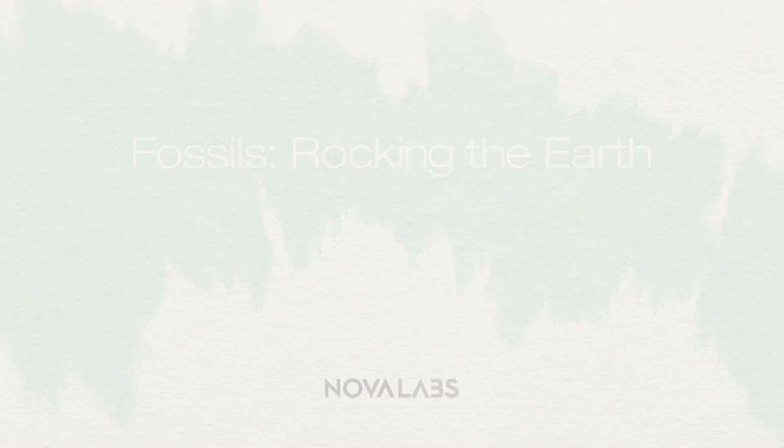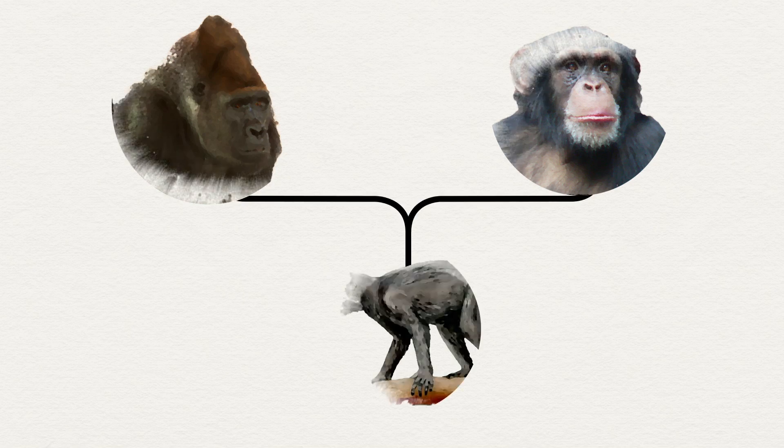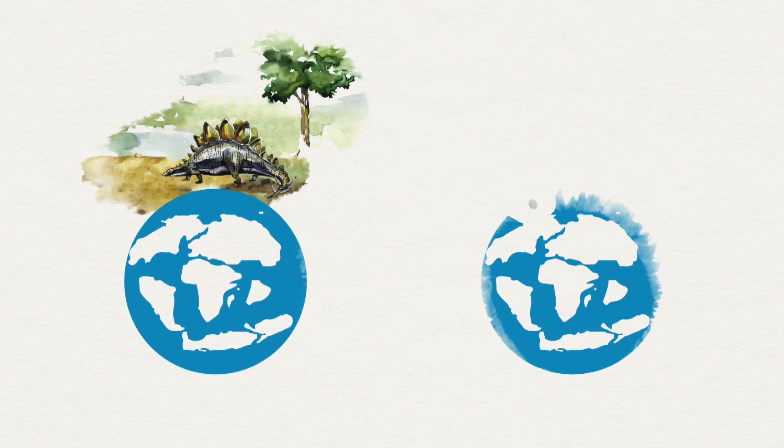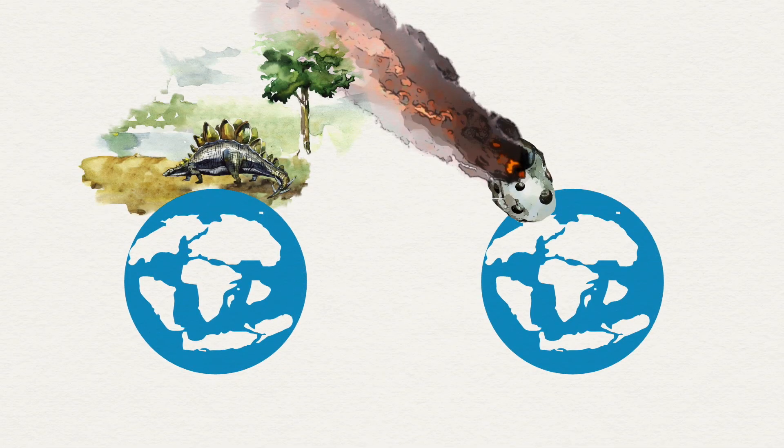How do we know that two species are related if their common ancestor is no longer alive? How do we know what happened on Earth before humans showed up?